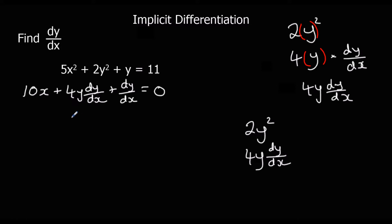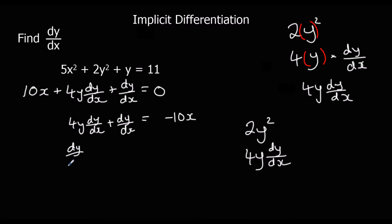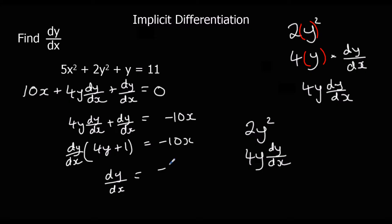If we take 10x off both sides, we get 4y dy/dx plus dy/dx equals minus 10x. We can factorise out the dy/dx, which leaves us with dy/dx times (4y plus 1). Dividing both sides by (4y plus 1) gives us dy/dx equals minus 10x over (4y plus 1).